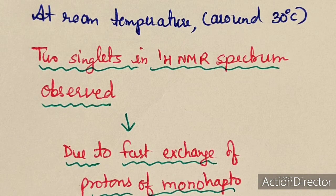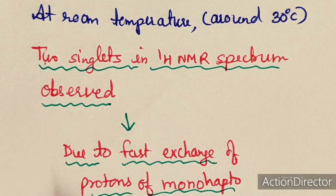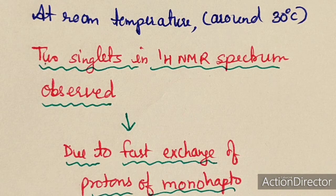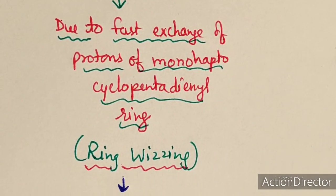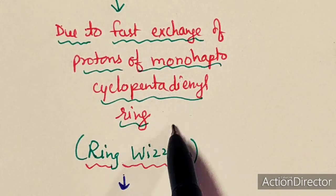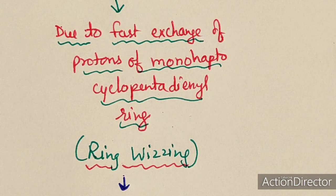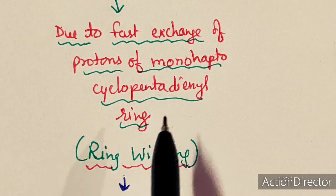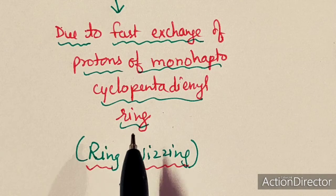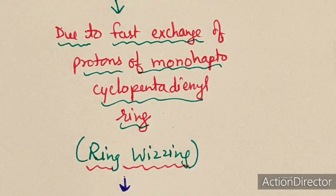At room temperature, around 30°C, we find two singlets in the 1H NMR spectrum of the iron compound. The reason is that there is a fast exchange of protons in the monohapto-cyclopentadienyl ring. This exchange is so fast compared to the NMR timescale that the different kinds of protons cannot be observed at room temperature. At lower temperature, the exchange slows down and separate peaks can be observed.